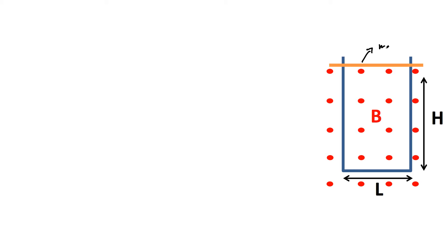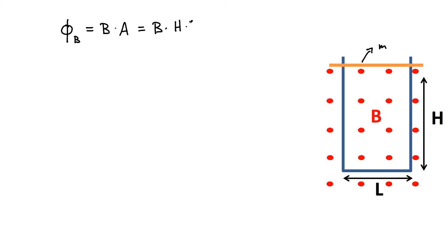The bar has mass M and I'm going to drop it. This is equivalent to a closed loop falling — the mass would represent the entire mass of the loop and the problem would be solved in a similar way. First, the loop has initial height H and width L, placed in a magnetic field of magnitude B. So initially there's a certain flux going through that loop. Magnetic flux is simply the magnetic field multiplied by the area, which is H times L.